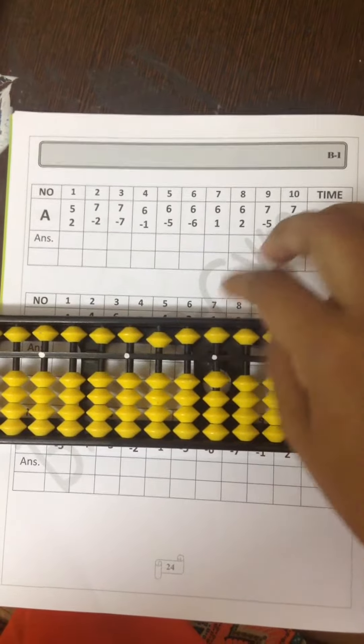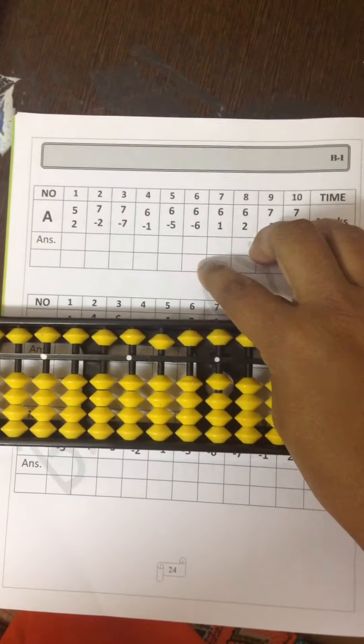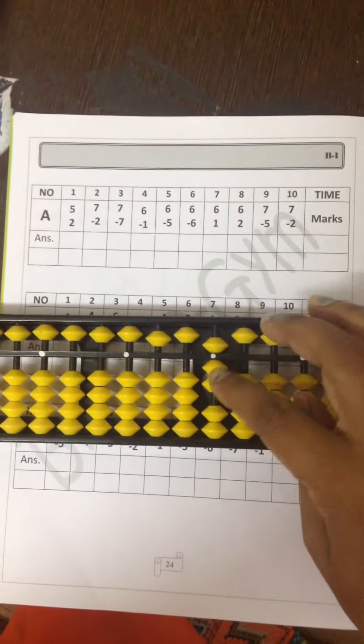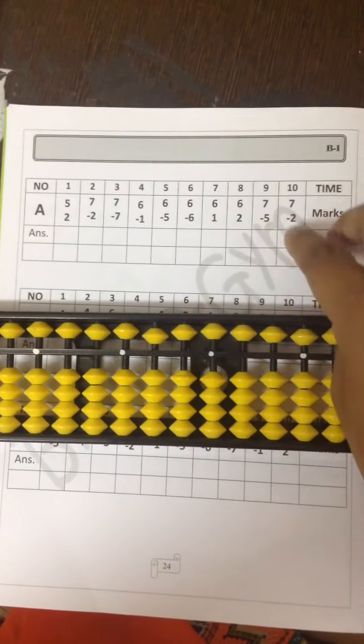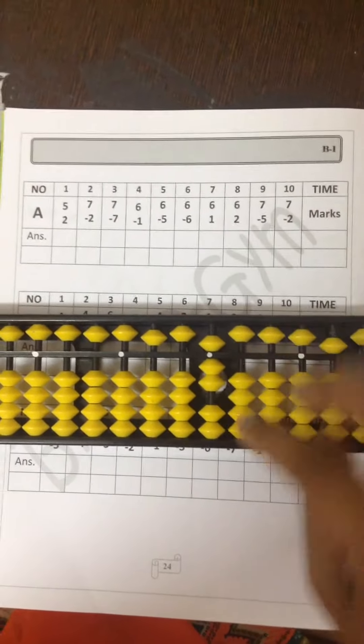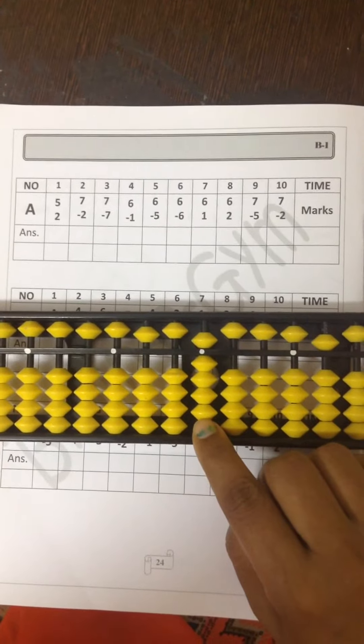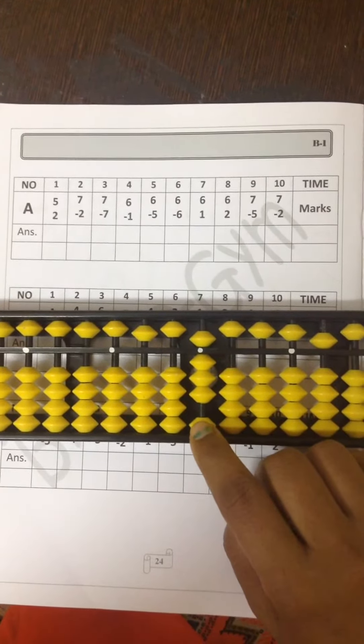6 minus 6. The answer is 0. 6 plus 1. The answer is 7. 6 plus 2. The answer is 8.